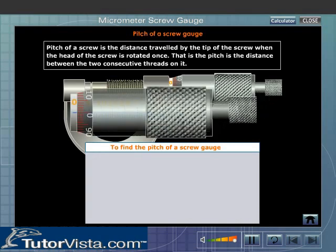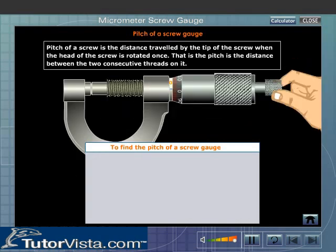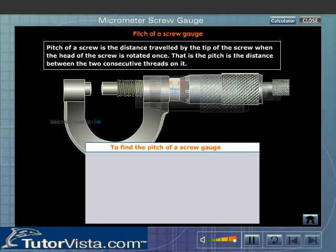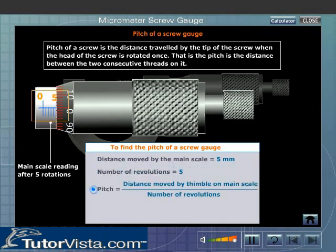In order to determine the pitch rotate the screw five times. Record the distance moved by the main scale. Distance moved by the main scale is equal to 5 mm. Number of revolutions is equal to 5. Pitch is equal to distance moved by thimble on the main scale by number of revolutions. That is equal to 1 mm.